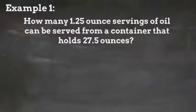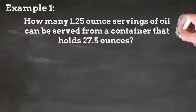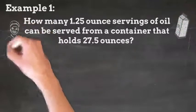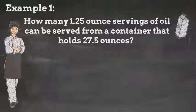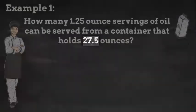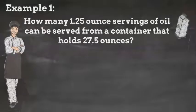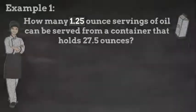Now that you know what to look for, let's try some practice problems. Example one, how many 1.25 ounce servings of oil can be served from a container of oil that holds 27.5 ounces? Well, step one was determine whether it's multiplication or division. And if I use the logic of the graphic organizer, I know that I have the total, 27.5, and I have the amount in each group, 1.25. So that means I need to divide.